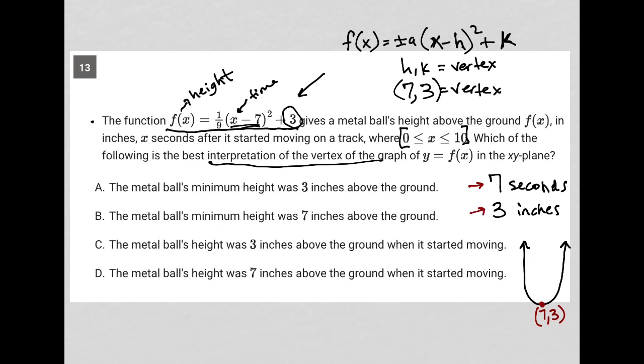I think choice A is correct. Choice B: the metal ball's minimum height was seven inches above the ground. Nope, seven has to do with seconds, not height. Choice C: the metal ball's height was three inches above the ground when it started moving.